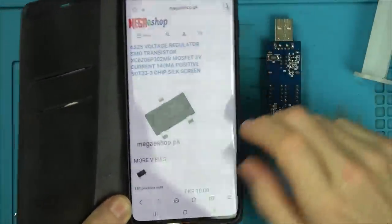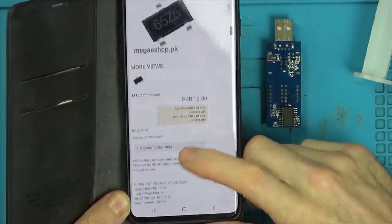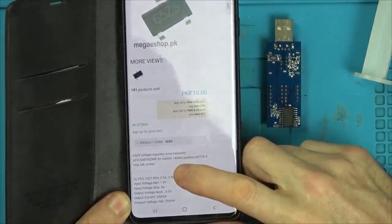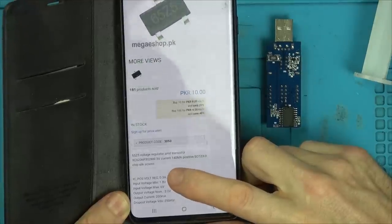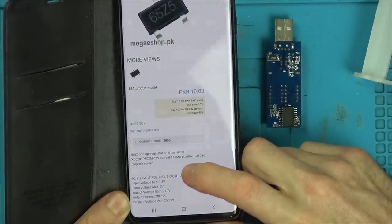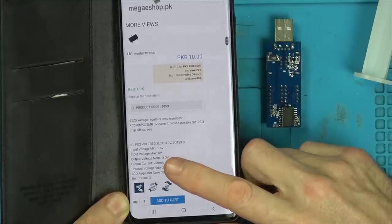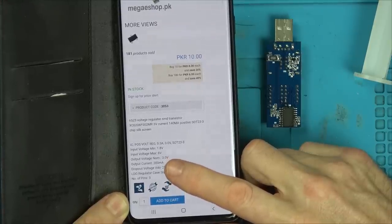Right, it looks like it's a little voltage regulator. So, it says here, it says voltage regulator, SMD transistor, 3 volts current, 140 milliamp, positive. It says that input voltage is min 1.8 volts to 6 volts.